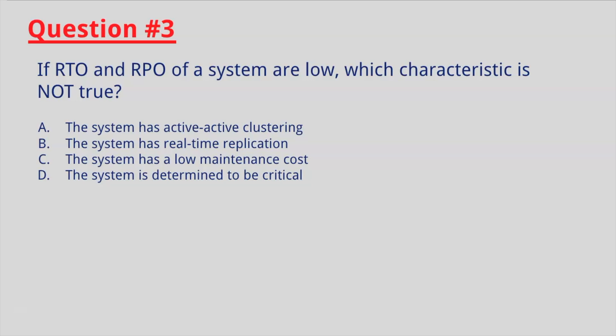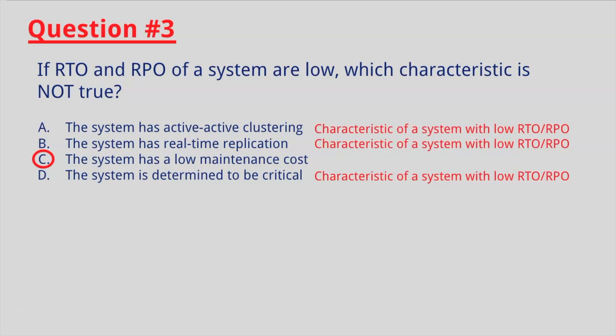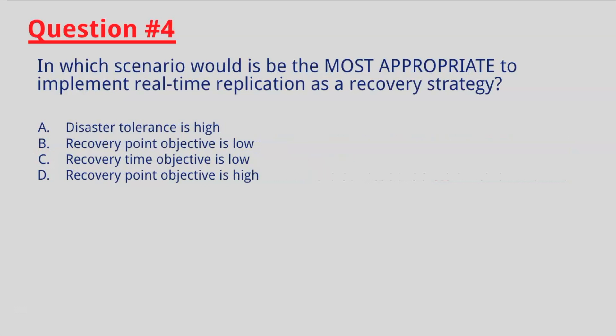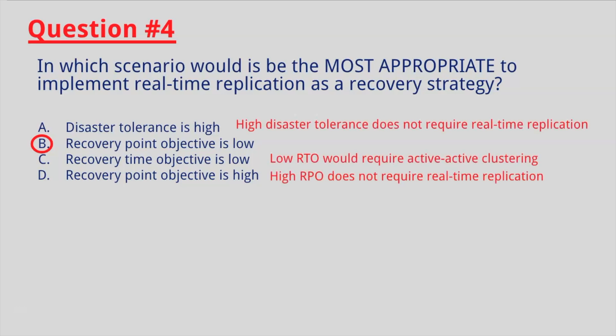Question number three: if RTO and RPO of a system are low, which characteristic is not true? If you selected C, you are correct. The other choices are characteristics of a system with low RTO or RPO. Question number four: in which scenario would it be most appropriate to implement real-time replication as a recovery strategy? If you selected B, you are correct — recovery point objective is low. Real-time replication is associated with RPO, and when RPO is low, within one hour from the disaster, real-time replication is used as a recovery strategy.